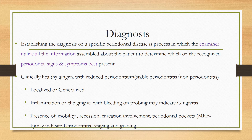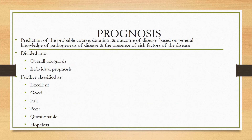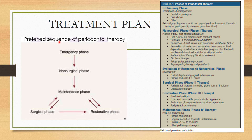Classification has already been covered so it won't be repeated. Coming to prognosis — the prediction of probable course, duration, and outcome of disease — also covered in a separate chapter. Based on that, we categorize as overall prognosis and individual tooth prognosis: excellent, good, fair, poor, questionable, or hopeless. The treatment plan follows a preferred sequence: emergency phase, non-surgical phase, re-evaluation, surgical phase if indicated, restorative phase, and maintenance phase.